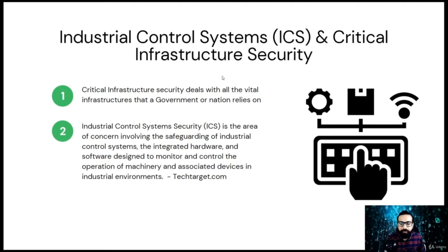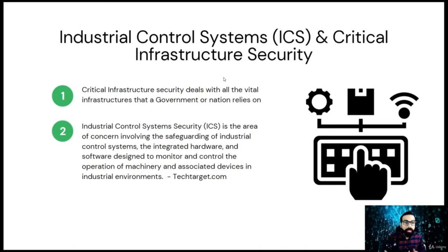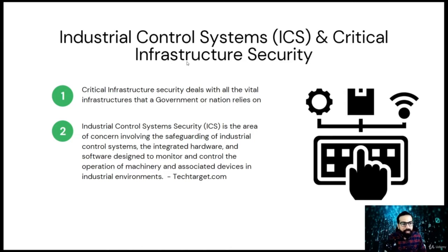I will discuss ICS and critical infrastructure security together. ICS, or industrial control systems security, is a specialized domain of critical infrastructure security. Critical infrastructure security deals with all the vital infrastructures that a government or nation relies on — cyber-physical systems crucial for modern societies, such as hospitals, traffic control, transportation, electricity, and nuclear plants. ICS, OT (operation technology), and SCADA systems are components of critical infrastructure security.